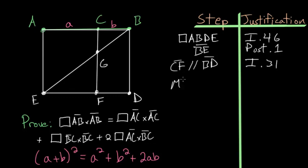And now let's also construct a line MK that is parallel to the line AB, again using Book 1 Proposition 31.